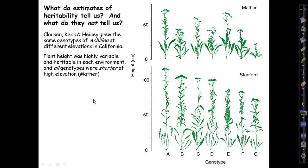What they noticed is that all of the genotypes were shorter at higher elevations. Every single genotype, all seven of them, is taller at Stanford, shorter at Mather.